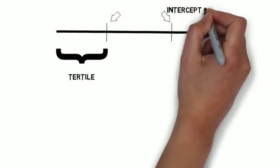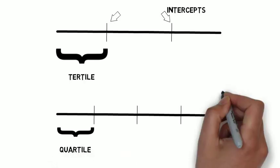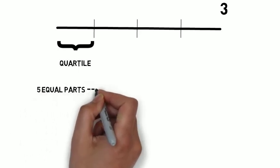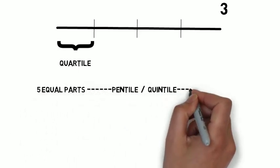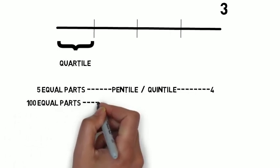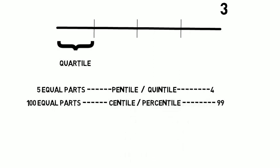If you divide a line into 3 equal parts, each part is called a tertile, and the dividing points are called intercepts. Dividing into 4 parts gives quartiles with 3 intercepts. For 5 parts, each part is called a quintile and there are 4 intercepts. For 100 equal parts, each part is called a centile or percentile, and the number of intercepts is 99.